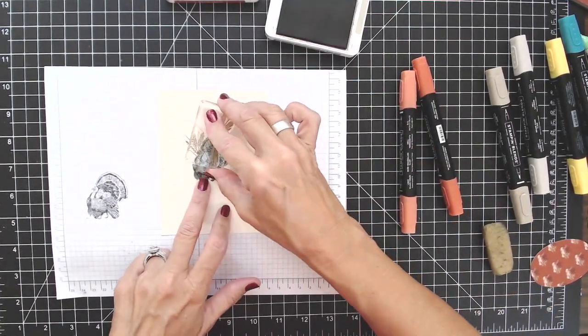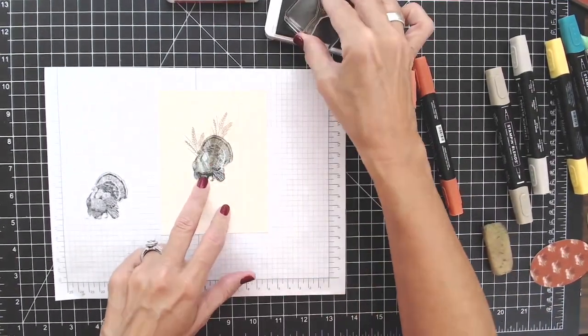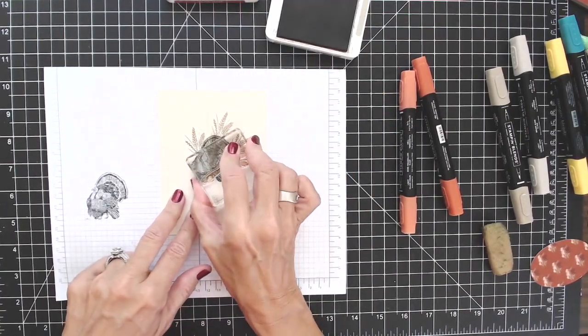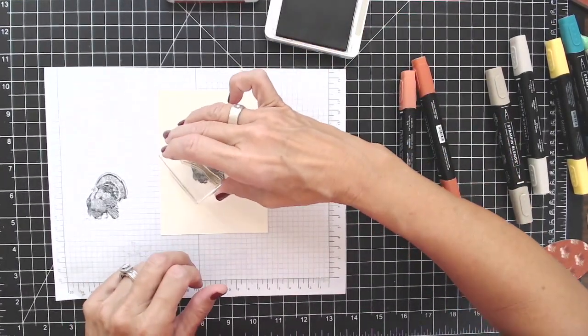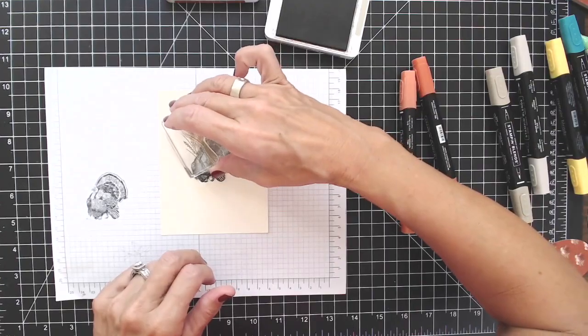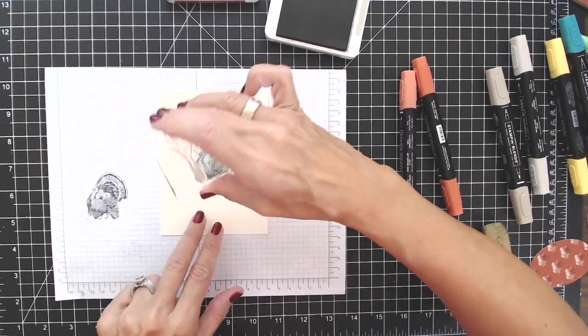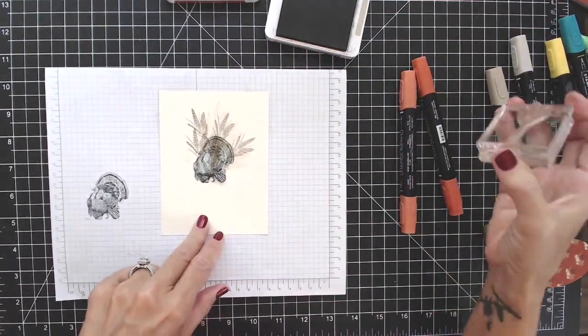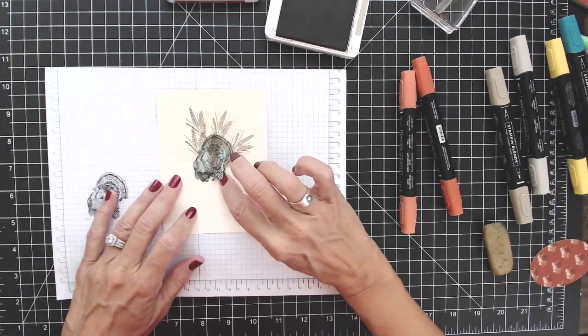So I'm doing first and second generation stamping here because I just want it to look like there's wheat coming back behind him.